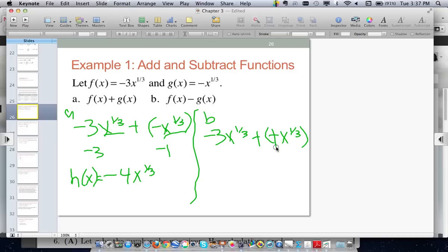So negative 3 plus positive 1 would be negative 2, so our new function, when I add the two functions together, it becomes negative 2 times x to the 1/3.